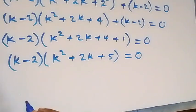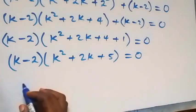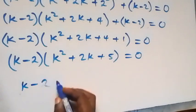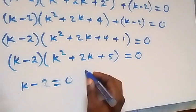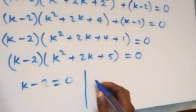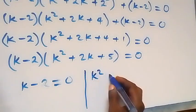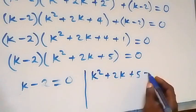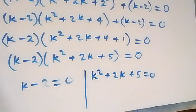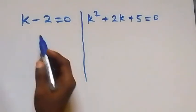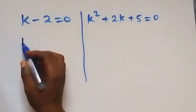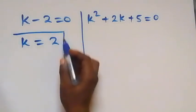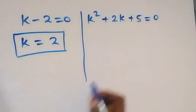Then we have k minus 2 equals to 0 here, or we have k squared plus 2k plus 5 equals to 0. On this side, taking minus 2 to the other side, we have k equals to 2.